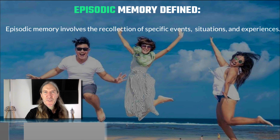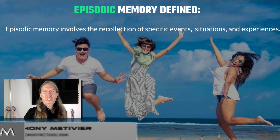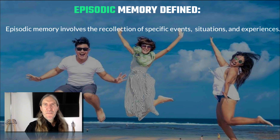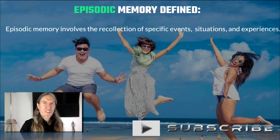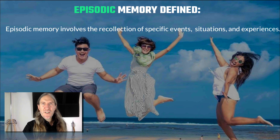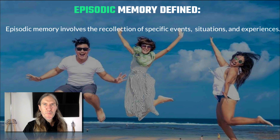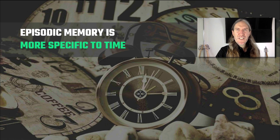The first thing about episodic memory is that it involves the recollection of specific events. It's essentially story-based — having a beginning, a middle, and an end to the things that you recall about episodes, either in your life, the lives of others, or even in stories that have nothing to do with your own experience but you've experienced vicariously. Episodic memory is really related to time, so things have a beginning, a middle, and an end.